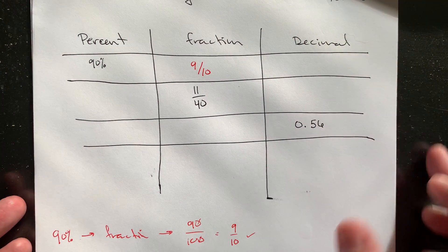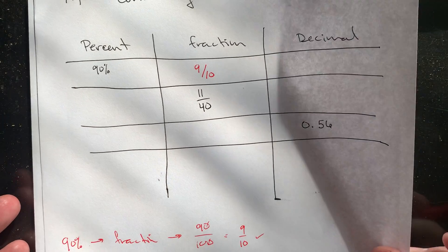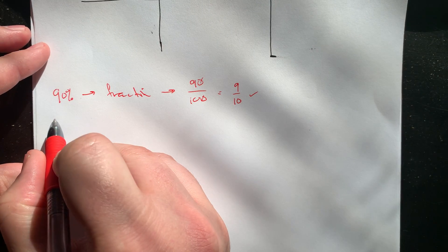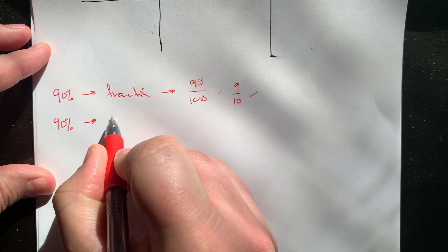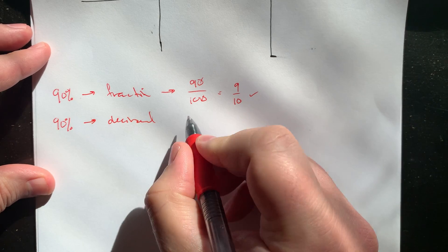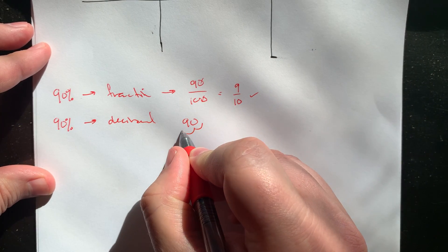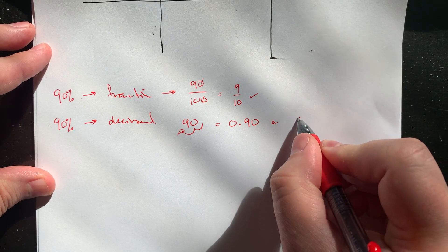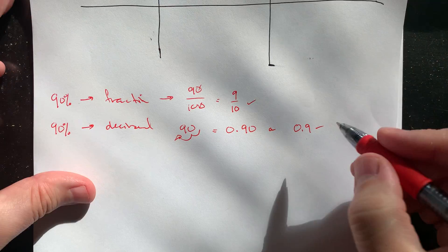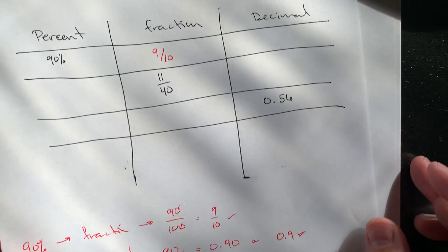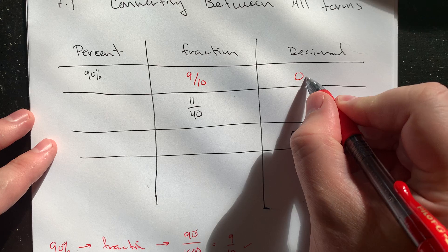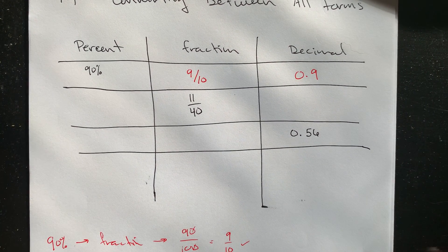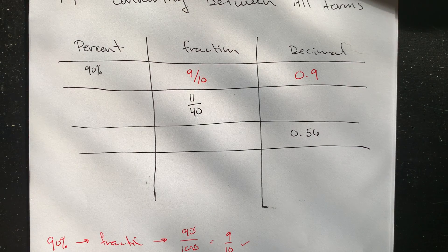Percentages to decimals are also very fast. All we have to do is shift our decimal place. So 90% into decimal form. 90, shift this twice to the left. 0.90, aka just a 0.9 is probably how we're going to write that. And so that's what we'll put up here. So starting with the percent, we can do those two conversions and then get our new numbers.